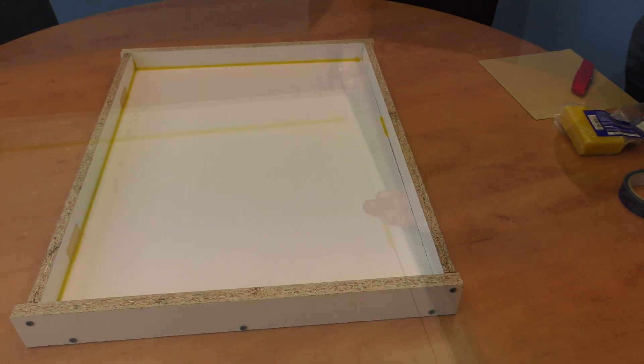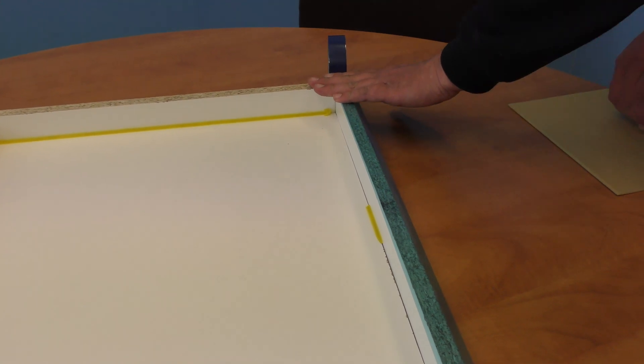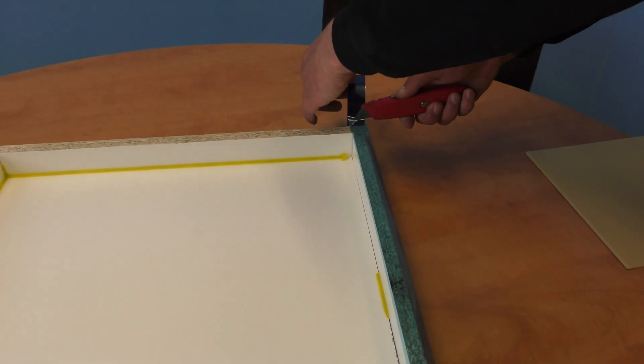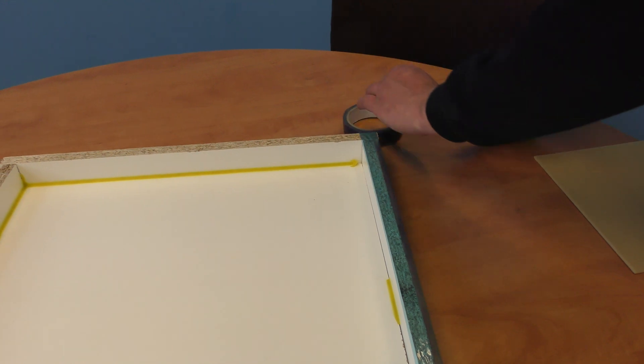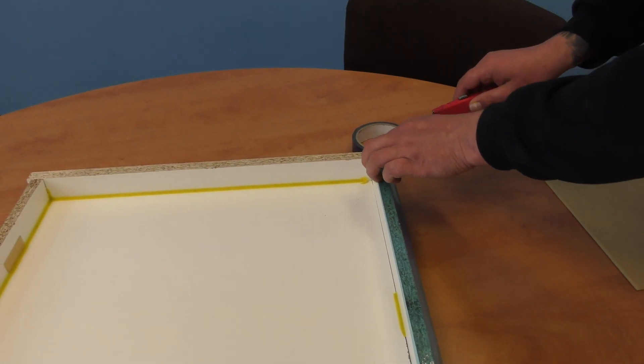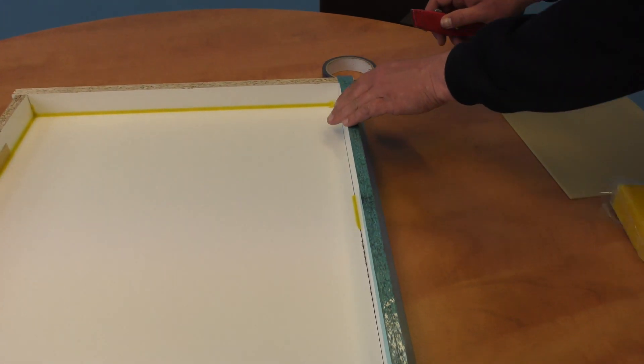A good tip is to use flash tape to seal the cut edges of the boards. That'll stop the resin from soaking in and damaging the mold should you wish to use it again.